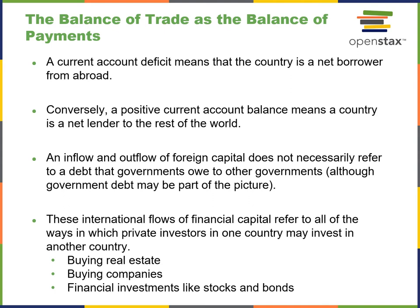A current account deficit means the country is a net borrower. Conversely, a surplus means the country is a net lender. It is possible to be both. An inflow or outflow of foreign capital does not necessarily refer to debt owed between governments, although government debt may be part of the picture. These international flows of capital refer to the other ways private investors in one country may invest in another — buying real estate, companies, or financial investments like stocks or bonds.